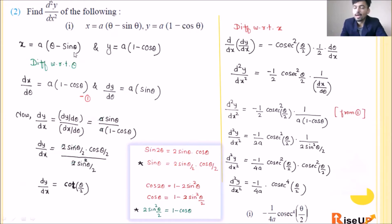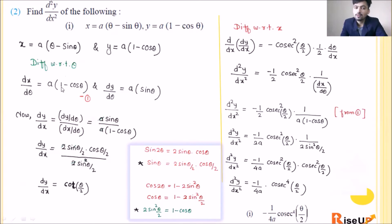Find the parameter. The parameter is θ. So differentiate both equations with respect to θ. dx/dθ equals a — coefficient as it is — θ derivative with respect to θ is 1, minus sinθ derivative is cosθ. Give this as equation 1.